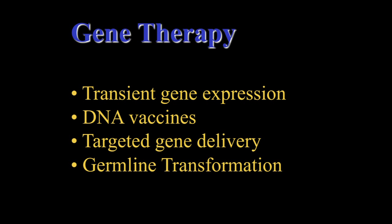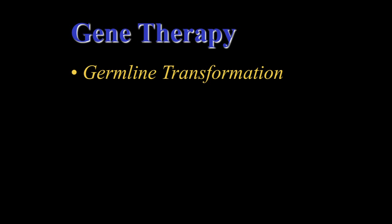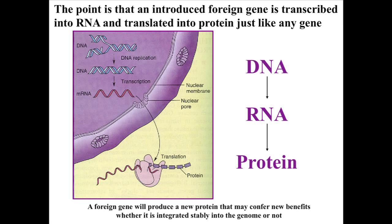Then we'll talk about targeted gene therapy and, lastly, germline transformation. An introduced foreign gene — whether in a plant cell or an animal cell making vaccines or therapeutic drugs, or replacing a gene — will be transcribed into RNA and translated into a protein just like any other gene. It doesn't matter even the source of that gene. DNA is DNA; the genetic code is the same.